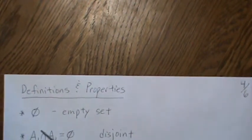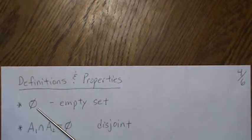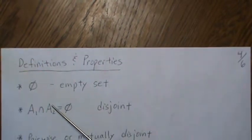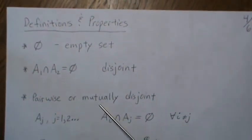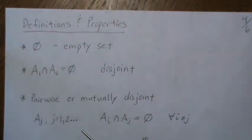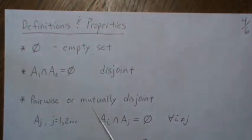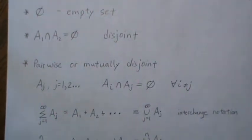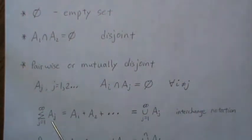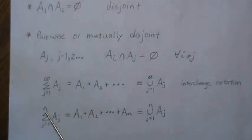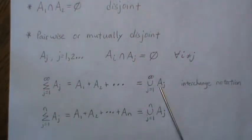Some definitions: this is called the empty set — it means there are no elements. If there's nothing in common between two sets, we call them disjoint. Pairwise or mutually disjoint means if we have some A_j's from one to infinity, and pairwise they're disjoint, it's called pairwise disjoint. We will interchange notations: the plus sign, so if we have sets from one to infinity and we're adding them, that's the same as taking the union of them. This also applies for finite cases — putting them all together means taking the union.